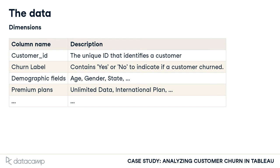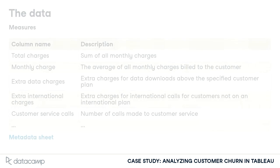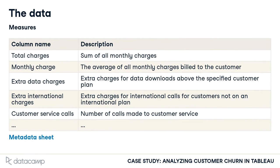The dataset contains numerous dimensions, the first one being customer ID. The customer ID is a unique ID that identifies an individual customer. The second column is called churn label, and indicates if a customer churned with yes or no. The dataset contains various other dimensions, such as demographic fields and information about premium plans. The dataset contains more than just dimensions, so let's look at some measures.